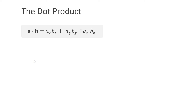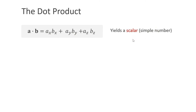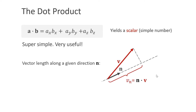The dot product and cross product are essential to do 3D simulations and 3D math in general. The dot product is an operation between two vectors, written as a little dot. To compute it: Ax times Bx plus Ay times By plus Az times Bz. The result is a scalar, which is why the dot product is sometimes called the scalar product. A first very important use case is to compute the length of a vector v along a direction defined by a unit vector n — we simply take the dot product between n and v.